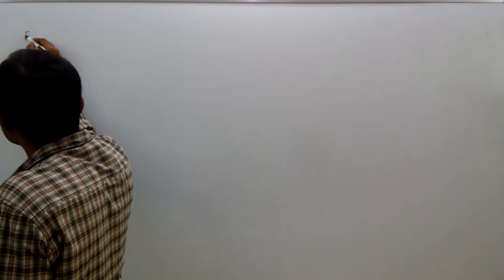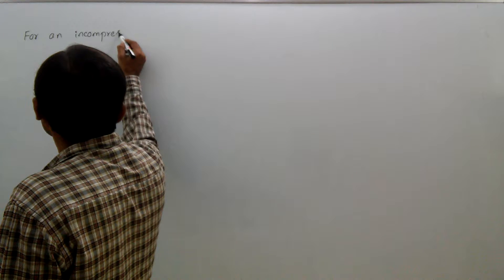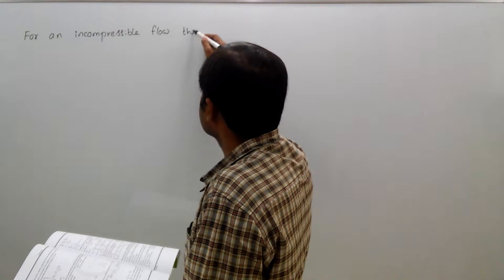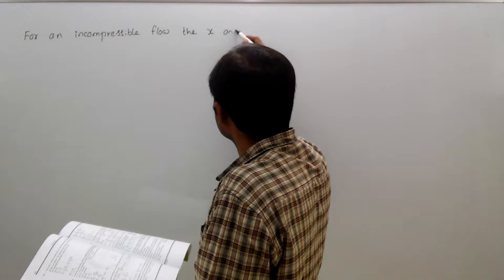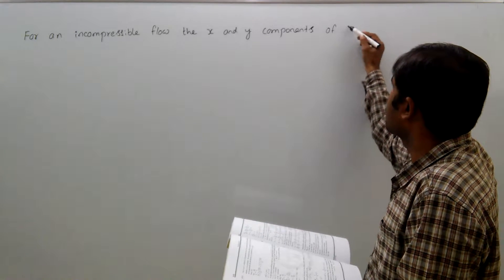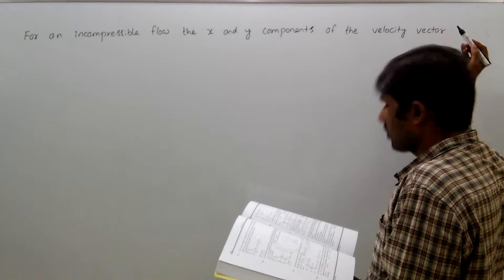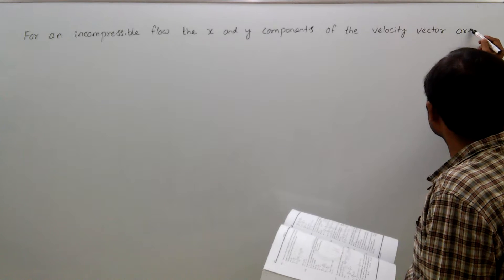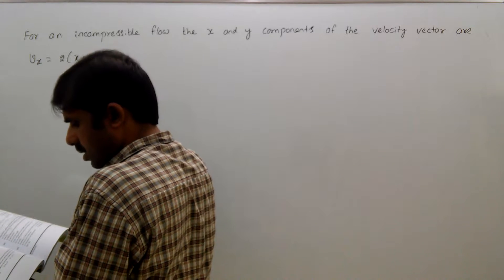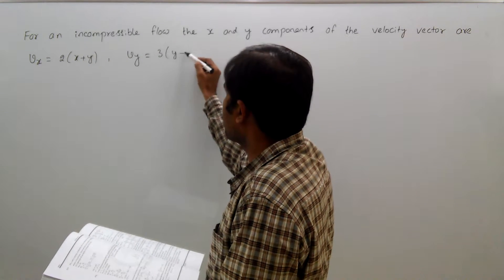For an incompressible flow, the x and y components of the velocity vector are vx = 2(x+y) and vy = 3(y+z), where x, y, z are in meters and velocities are in meters per second.